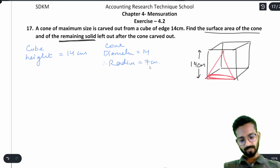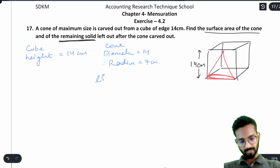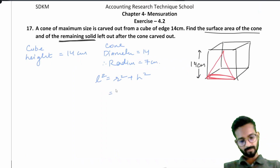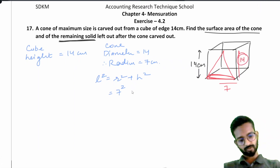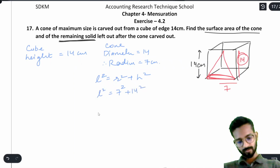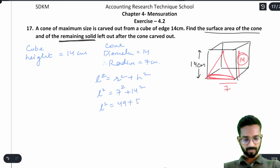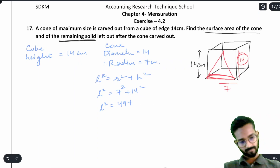We need to find the slant height. l² = r² + h². Radius is 7 and height is 14 (same as cube edge). So l² = 7² + 14² = 49 + 196 = 245, therefore l = 7√5. This is the slant height.